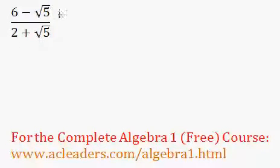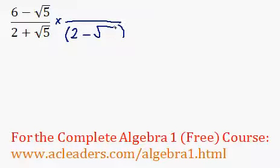All right, let's rationalize this fraction. We have 6 minus root 5 all over 2 plus root 5. And what I will do here is that I will multiply top and bottom by the conjugate, and the conjugate of 2 plus root 5 is just 2 minus root 5. That's all we have to do.